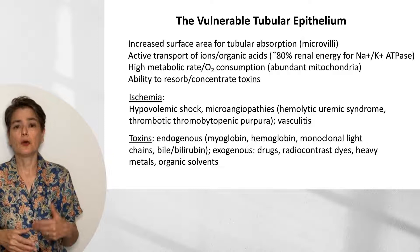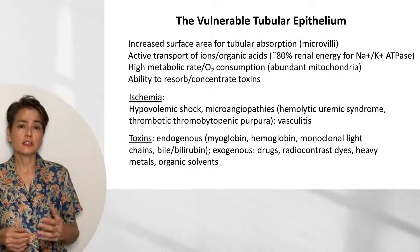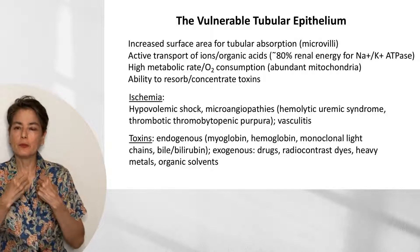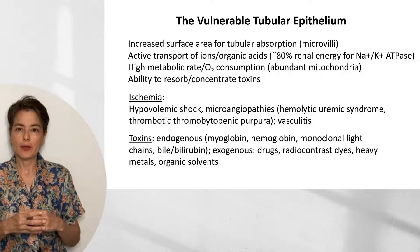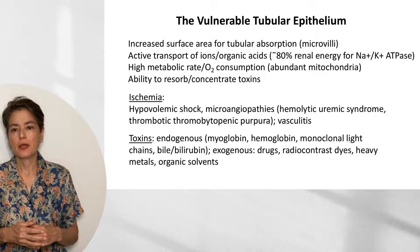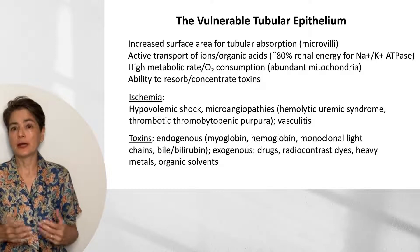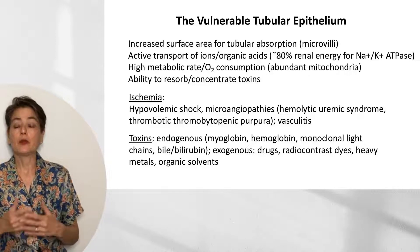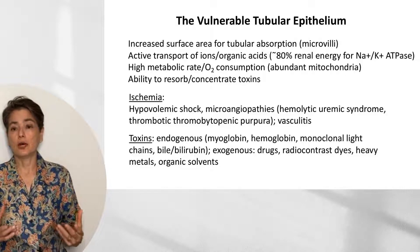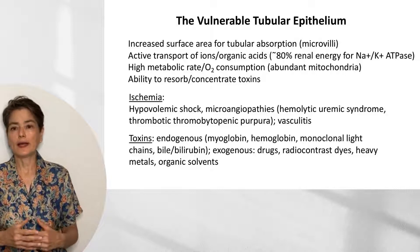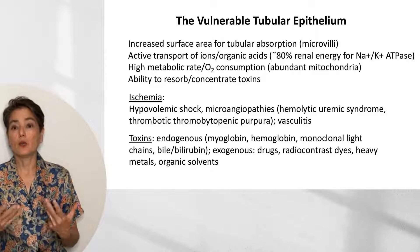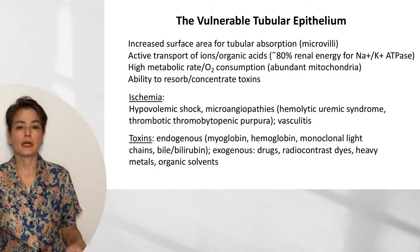And then there are toxins — both endogenous and exogenous. Endogenous toxins include myoglobin: in a massive crush injury, myoglobin is released into the blood, filtered by the kidney, and can form myoglobin casts in the tubules. Hemoglobin, monoclonal light chains from multiple myeloma, bile, and bilirubin are also endogenous toxins. Exogenous toxins include a variety of medications, radiocontrast dyes, heavy metals, and organic solvents, and injury can be worsened if the patient is slightly dehydrated.